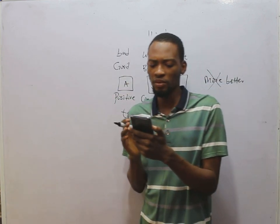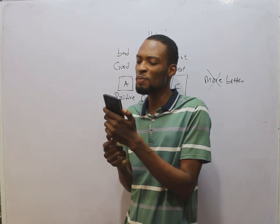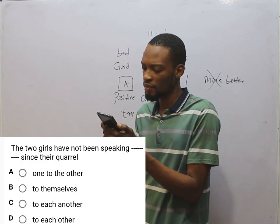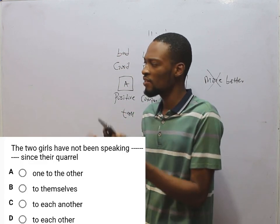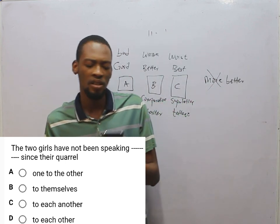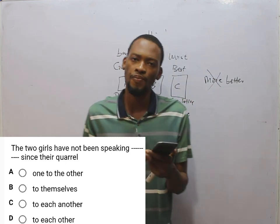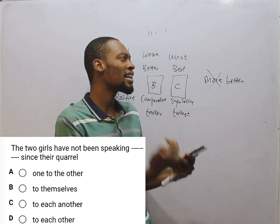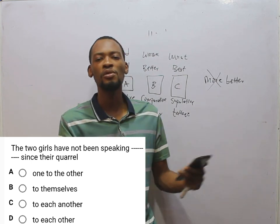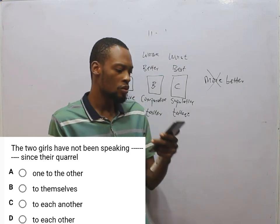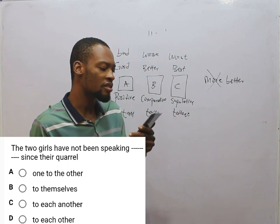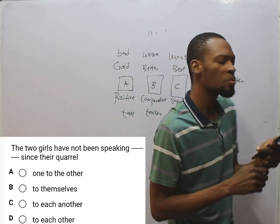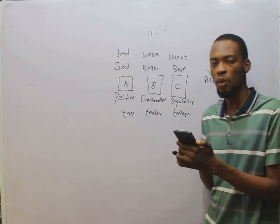The two guests have not been speaking dash since they quarrelled. Since we are talking about two guests, they have not been speaking to each other. When there are two persons, you use each other. When there are more than two, you use one another. So each other is correct: the two guests have not been speaking to each other.